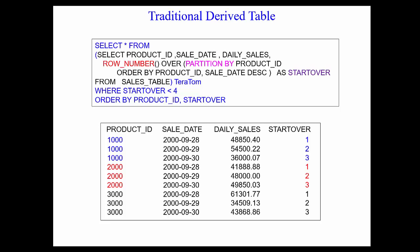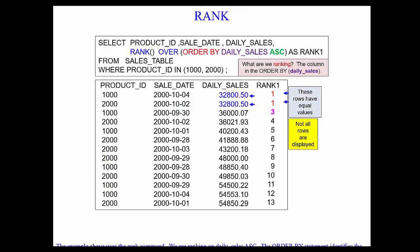Let's go to the RANK command. This is a brilliant command. What I love about RANK is that we can come in with a rank, and once again select product ID, sale date, daily sales. RANK, open paren, close paren — there's never anything in the rank. So you almost say, what are we ranking? Well, once you look at the OVER statement, you know we're going to order it. It's all based on the ORDER BY. I say ORDER BY daily sales ascending. So we're ranking daily sales in ascending mode. It sorts the data first by daily sales ascending, and then it puts the rank in.